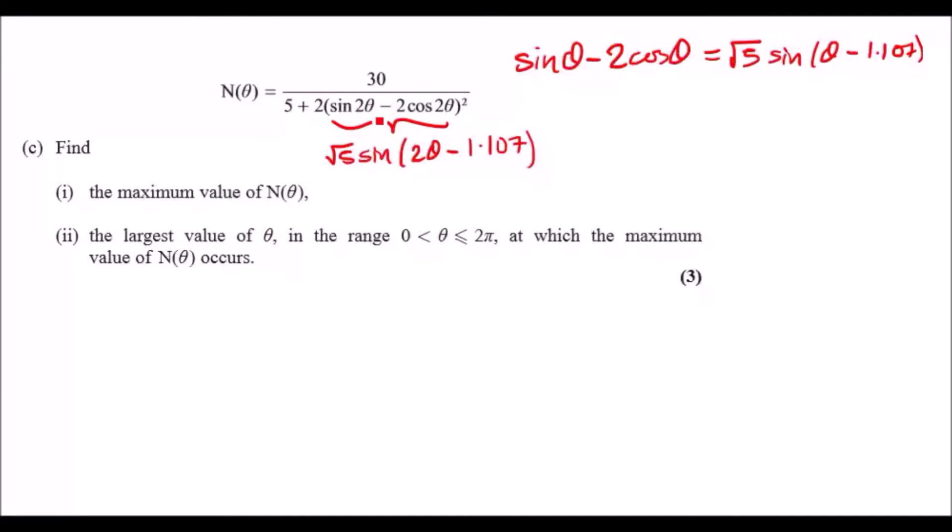Because 30 over 5 plus 0 will give us 6. But if you chose 1 for example, you're gonna get something like 30 over 5 plus 2 times root 5 times 1 squared, and that's gonna give you an answer like 2. So basically just make all of this 0.